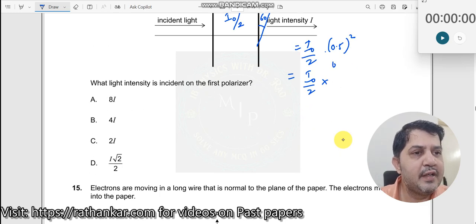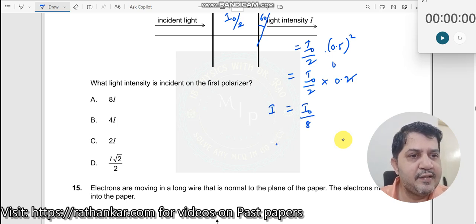Into 0.25, 0.5 squared, which should now be equal to i0 by 8. This is equal to i0 by 8. So what is i0? i0 should be equal to 8 times i. So the answer is 8i.